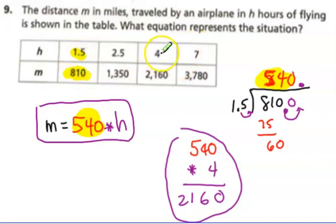But let's try it for 4. So if I have 4 hours of flight, h equals 4, so it goes here, and I multiply 540 times 4, I get 2160, which is the answer they got, which says to me that this is the correct formula, the correct equation.